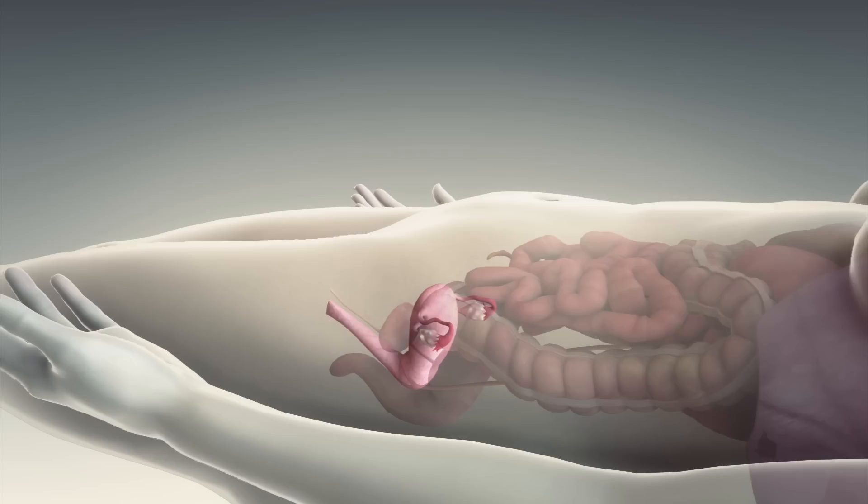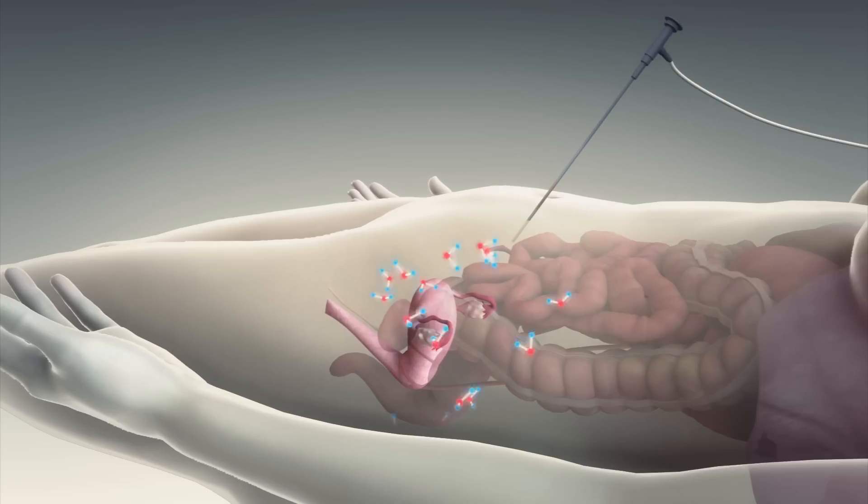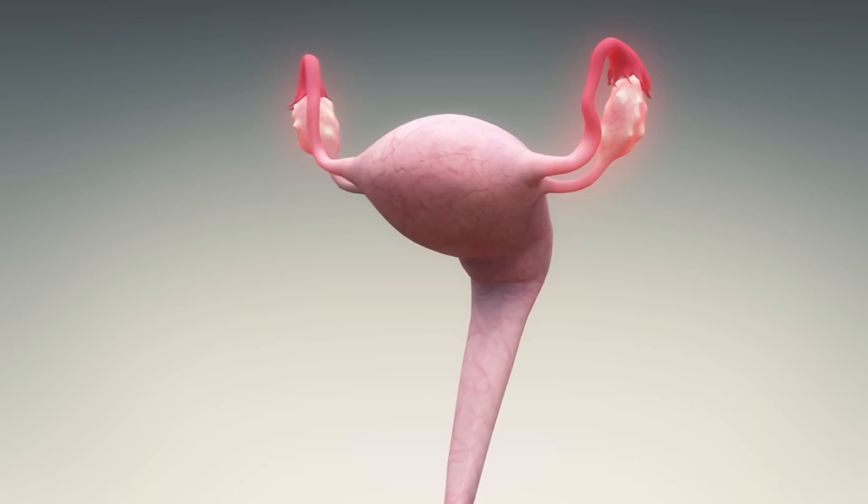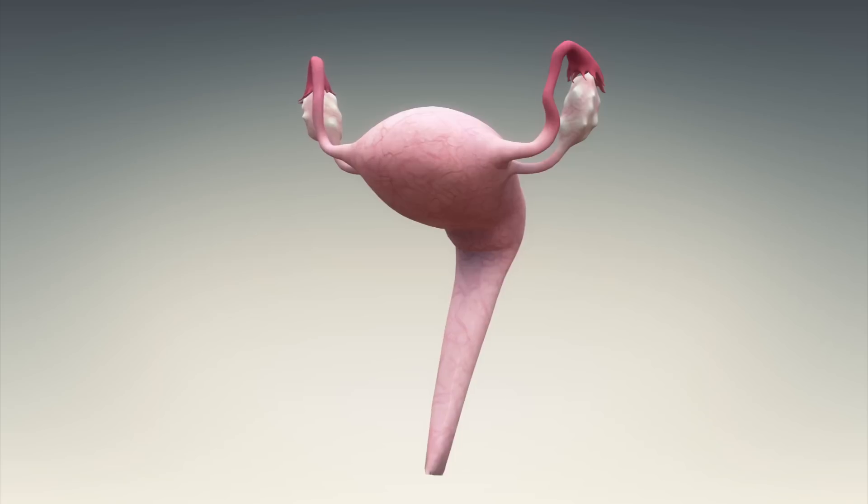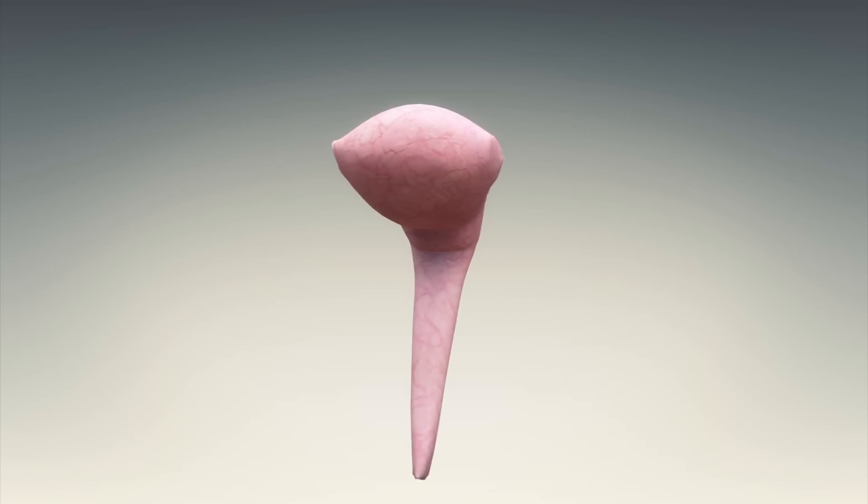A tube is inserted into the abdomen via incisions and CO2 is pumped in to widen the abdominal cavity. Surgeons insert a laparoscope with a camera attached into the abdomen, which allows doctors to see internal organs. Surgeons then remove the ovaries and fallopian tubes with surgical tools.